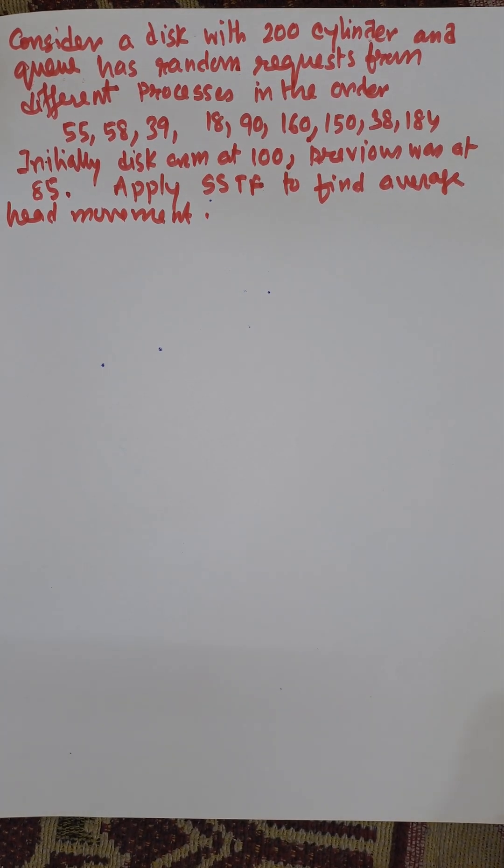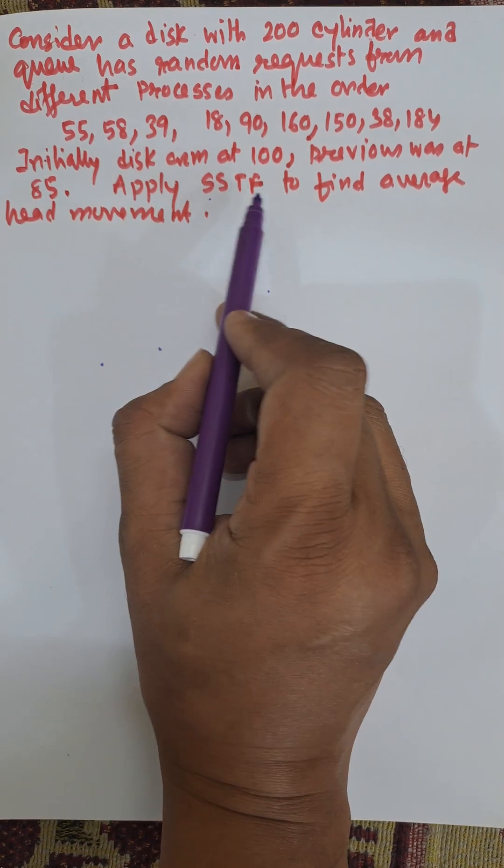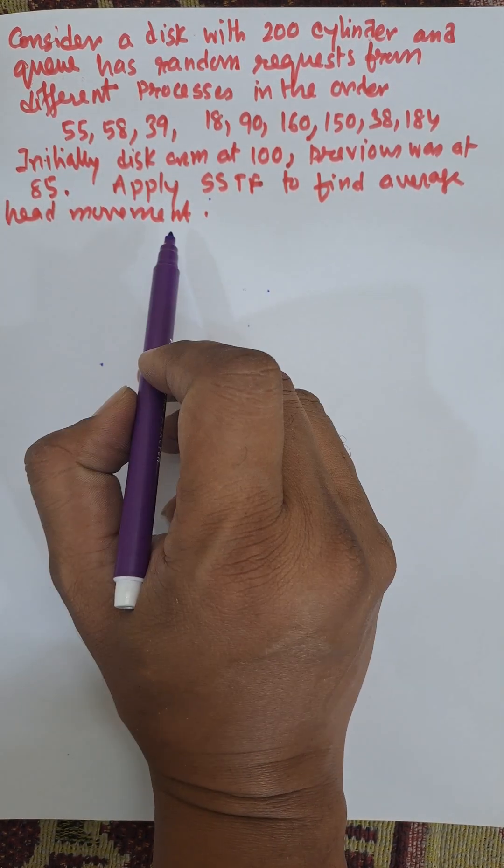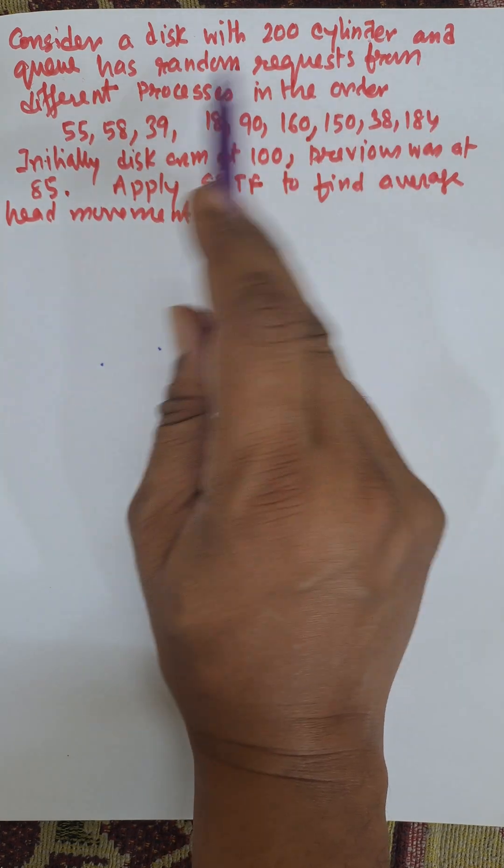Hi everybody, in this video I am going to discuss Shortest Seek Time First algorithm. This is the disk scheduling algorithm to find average head movement. Consider a disk with 200 cylinders and queue has random requests from different processes.